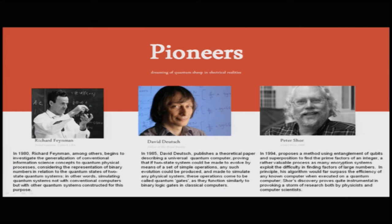In 1994, Peter Shor proposed a method using entanglement of qubits and superposition to find the prime factors of an integer — a valuable process since many encryption systems, like the RSA algorithm, exploit the difficulty of factoring large numbers. In principle, his algorithm would far surpass the efficiency of any known classical computer when executed on a quantum computer, provoking a storm of research by physicists and computer scientists.